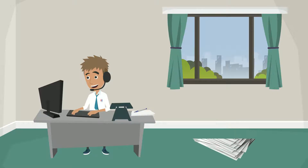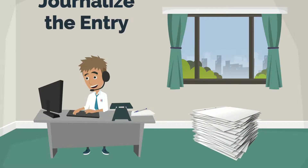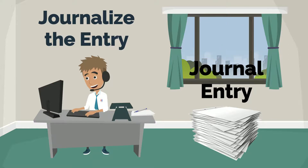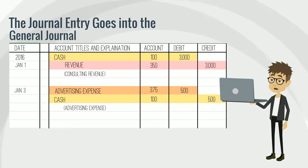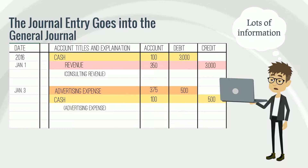After you have identified that an entry has to be made, you need to journalize it and get it into your accounting system. This is the journal entry. The journal entry is first and is very detailed — it has a date, amounts, at least two accounts that were affected, and the explanation.